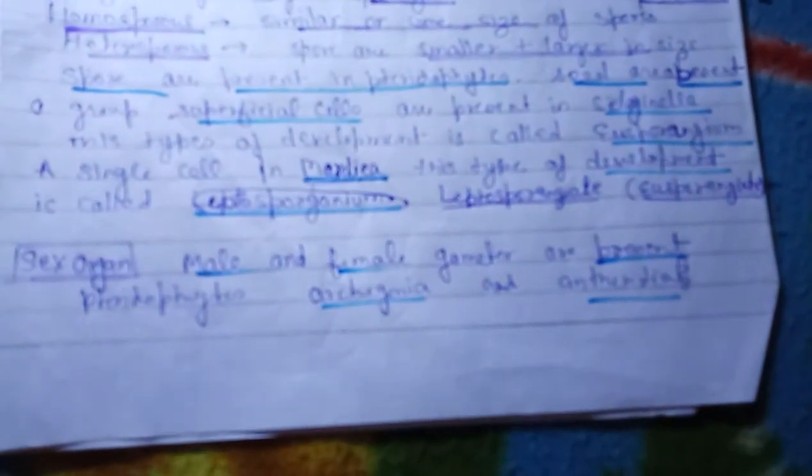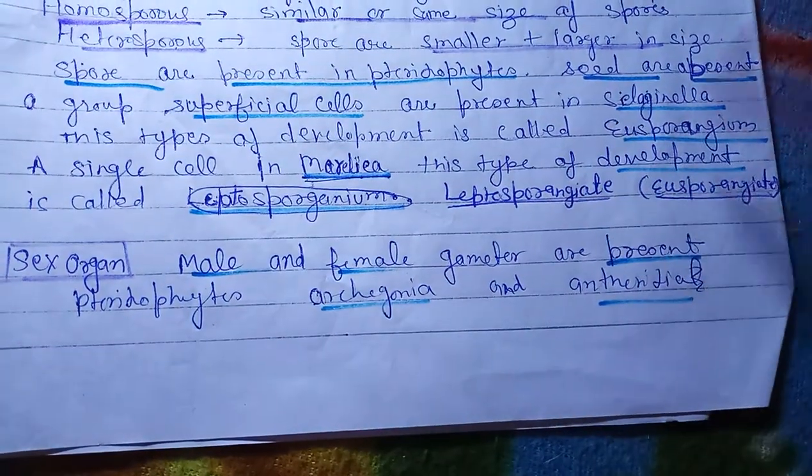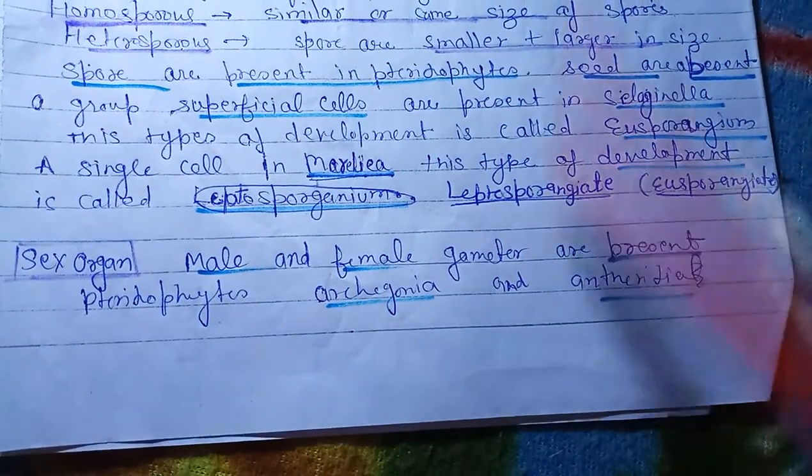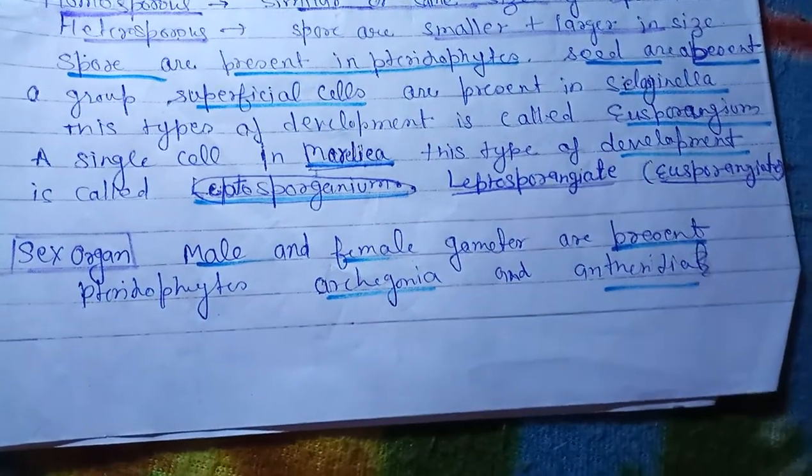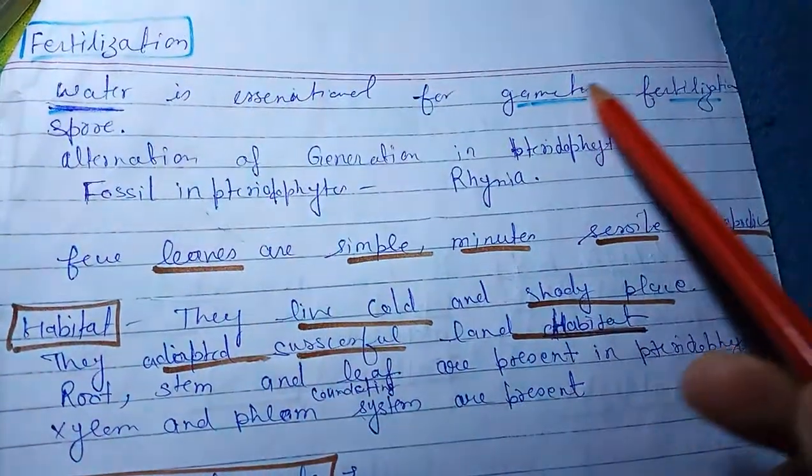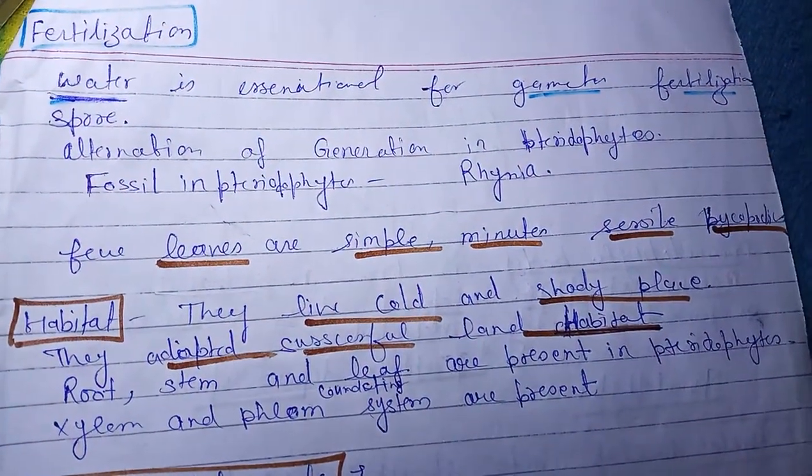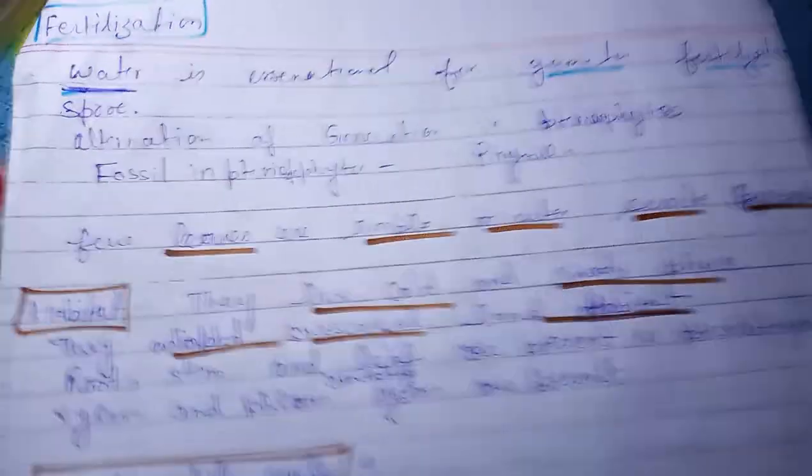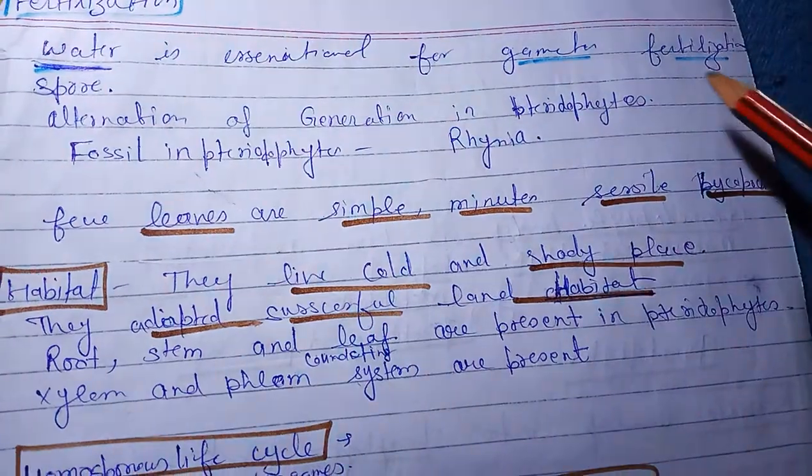The sex organs - male and female gametes both are present in pteridophytes. Water is essential for growth and development of gametes. Water is essential for fertilization of spores.